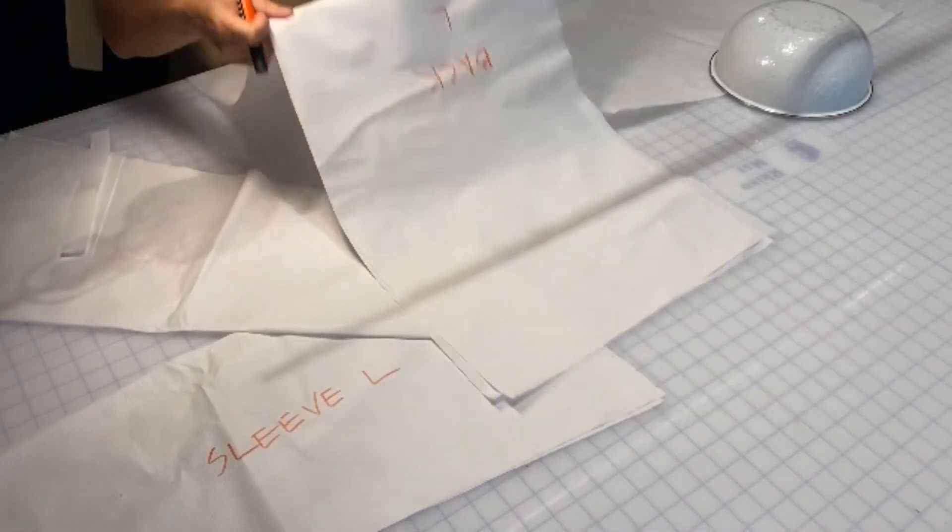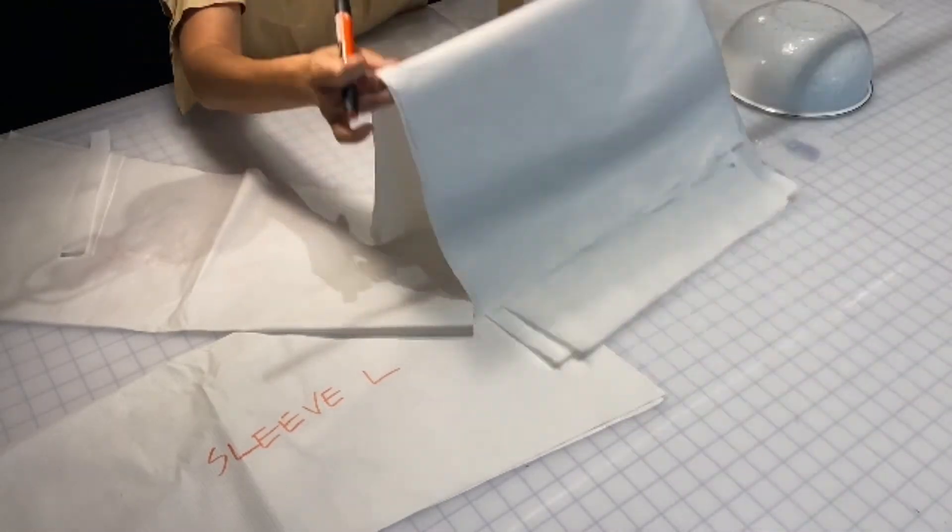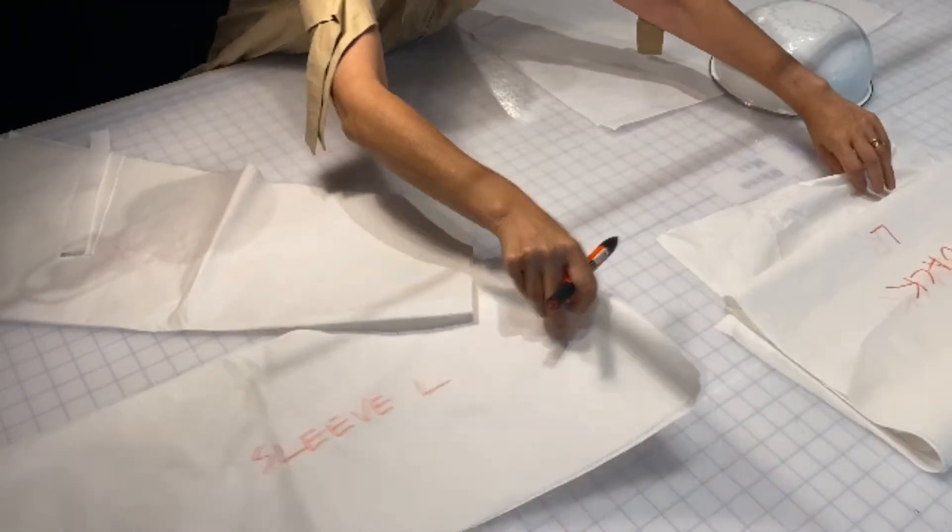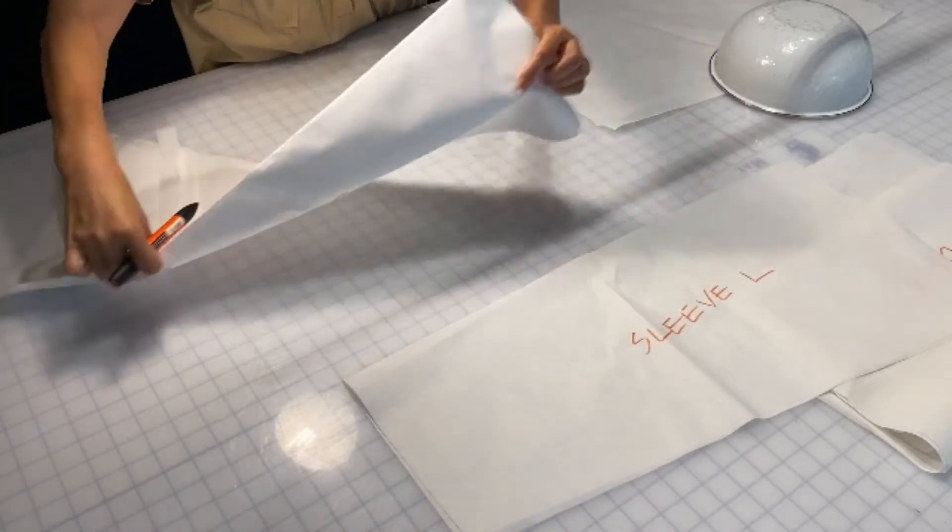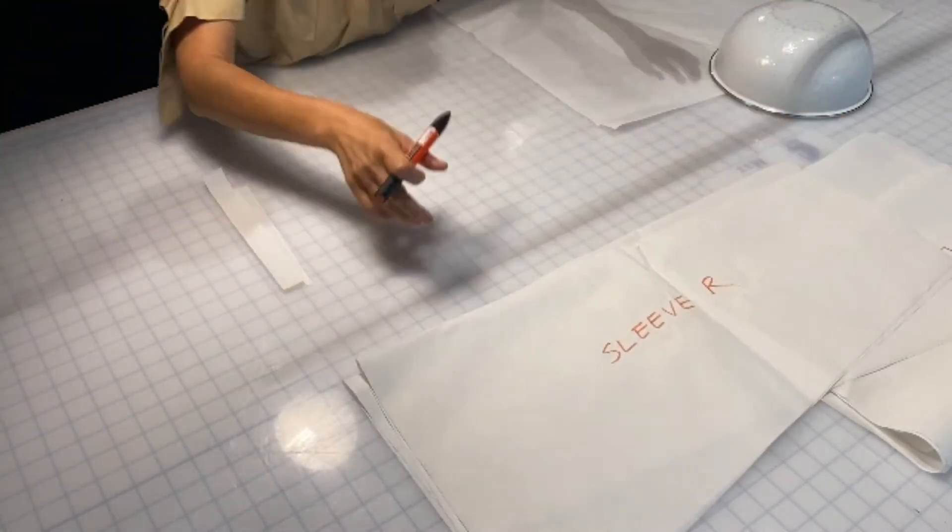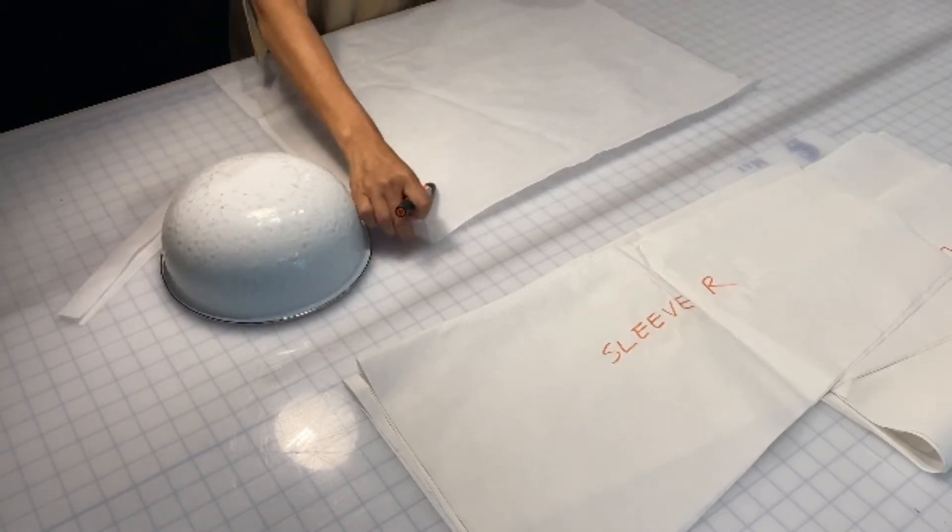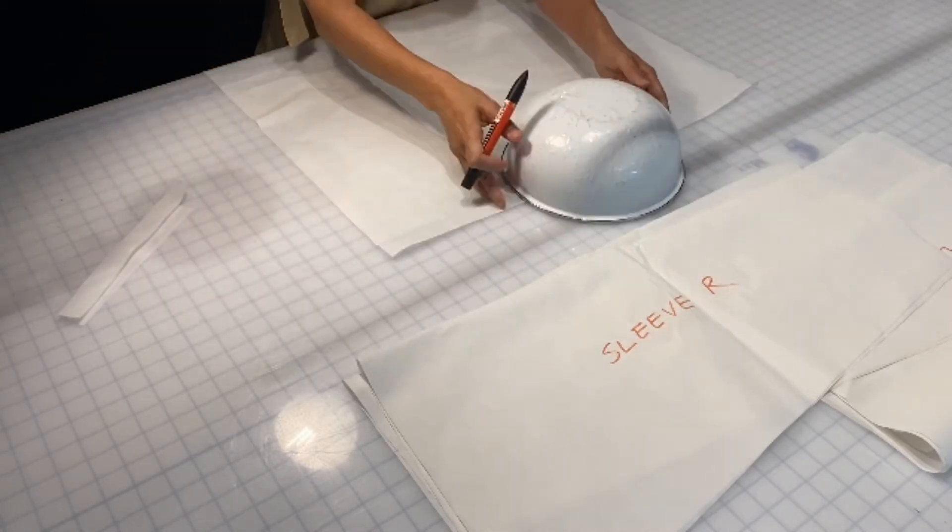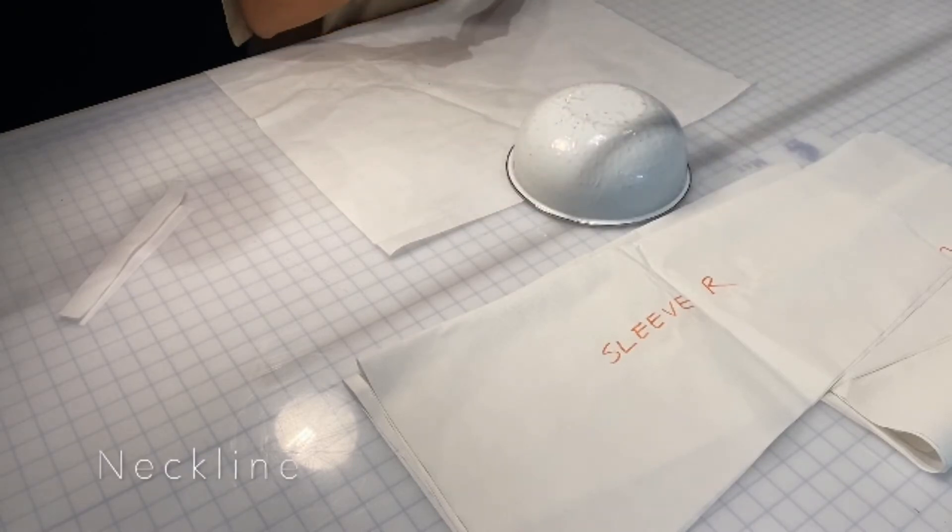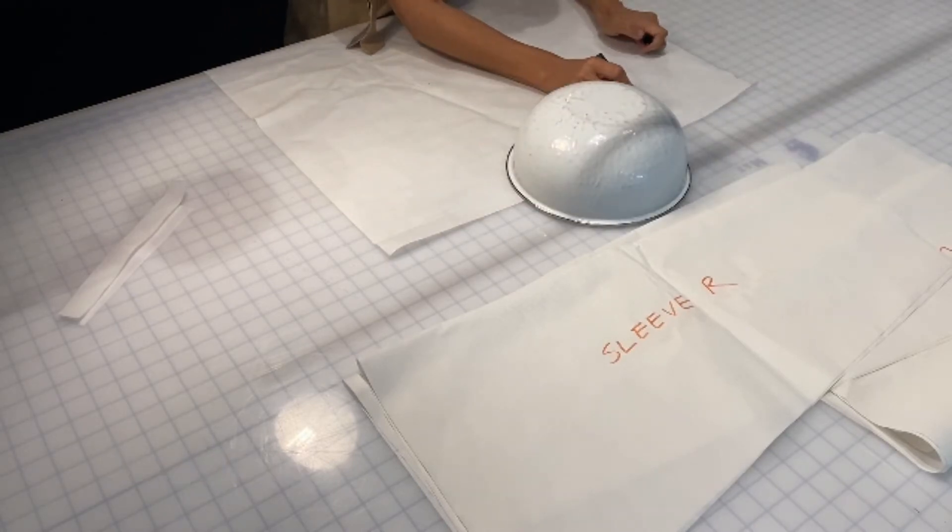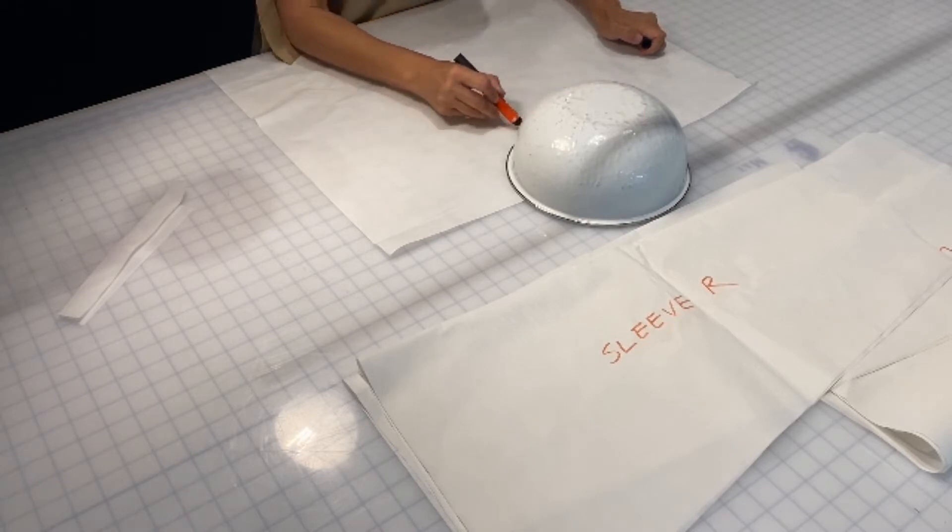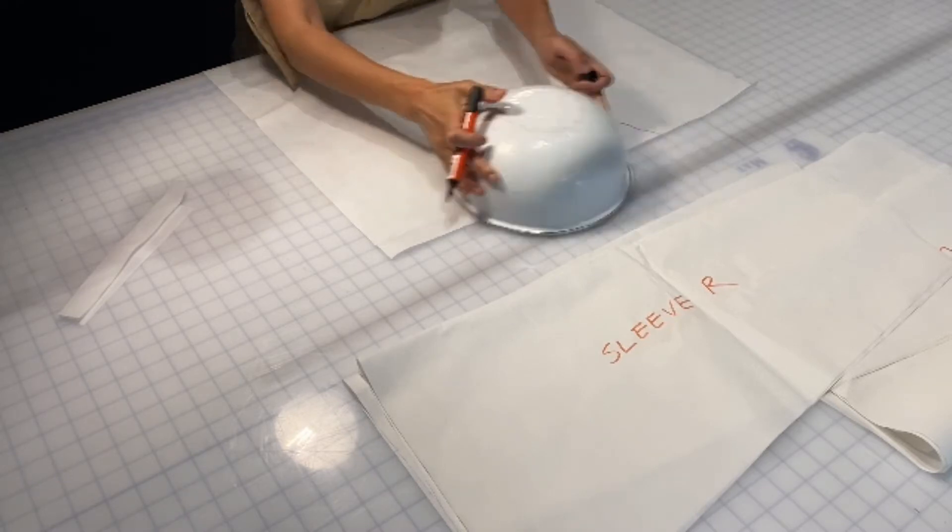Now we're going to get started, laying out all of our different pieces to make sure we have everything that we need. Your back pieces, your right and left sleeve pieces, and your front body. So now we're going to use that 10-inch salad bowl to create that neckline. You just place it on top of the pattern piece at the top and draw a little arc.